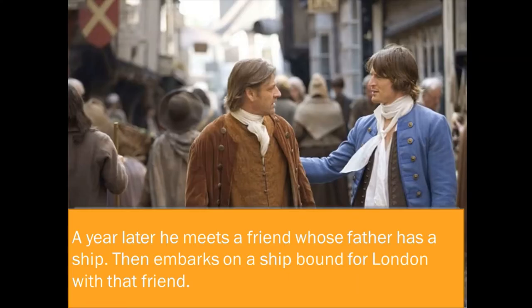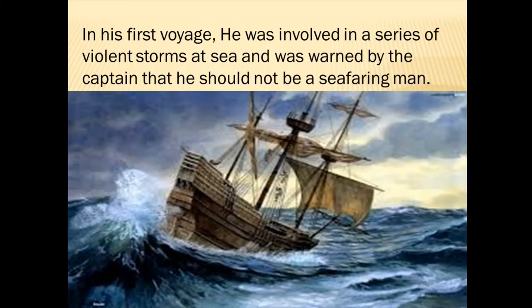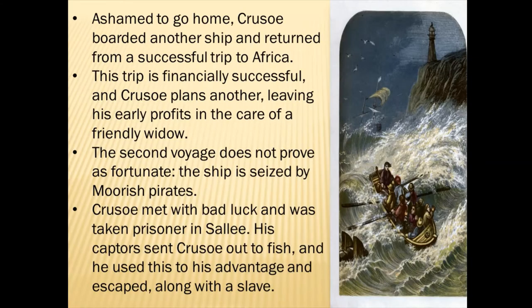A year later he meets a friend whose father has a ship, and he embarks on a ship bound for London. However, misfortune was there — on his first voyage he was involved in a series of violent storms at sea and was warned by the captain that he should not be a seafaring man. Ashamed to go home, Crusoe boarded another ship and returned from a successful trip to Africa. This trip to Africa made him both a successful merchant and a sailor. He explains that a voyage to Guinea made him financially successful, and he plans for another trip, leaving his early profits in the care of a friendly widow.